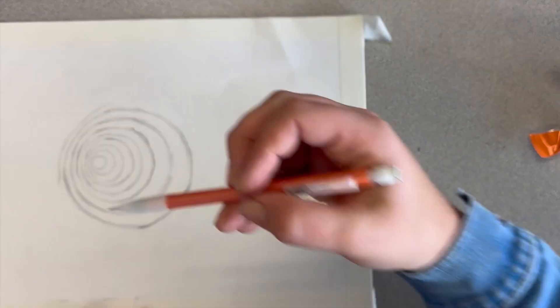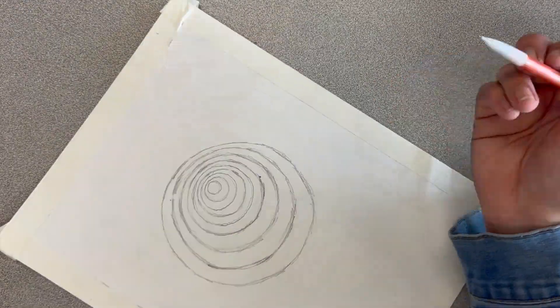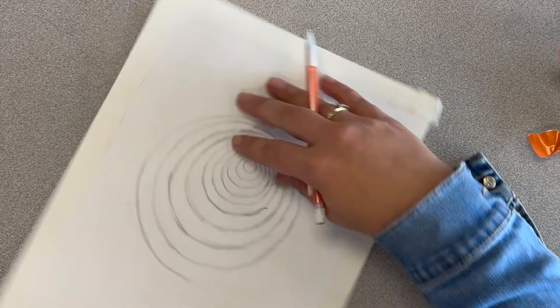So on one side of your paper, your circles are going to stay closer but not touching, and on the other side, every circle is going to start to get a little bit farther apart.